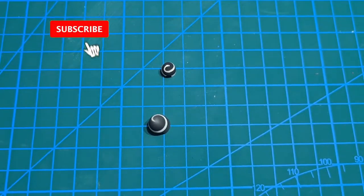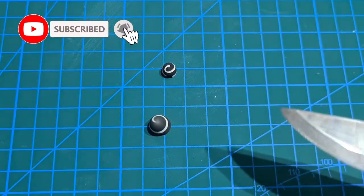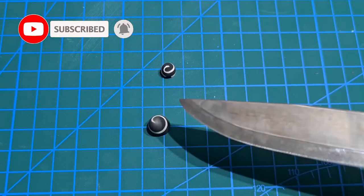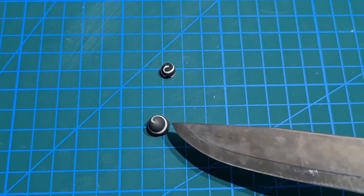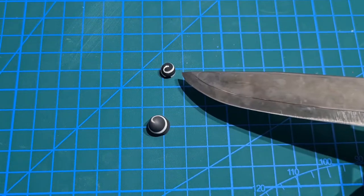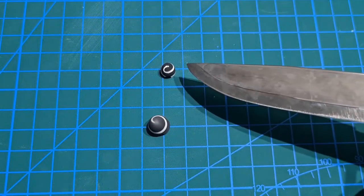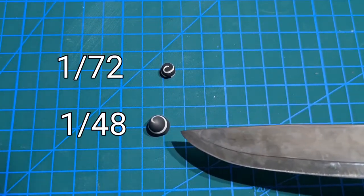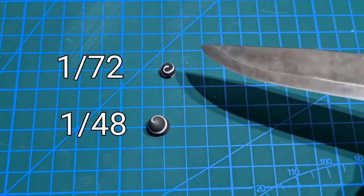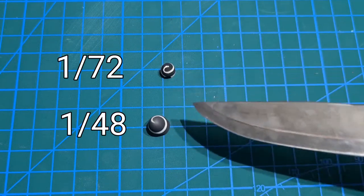So in today's video I will be painting these two spirals. Now this is 1x48 scale, this is 1x72 scale. I will use a different technique to paint this one and I will use a different technique to paint this one.